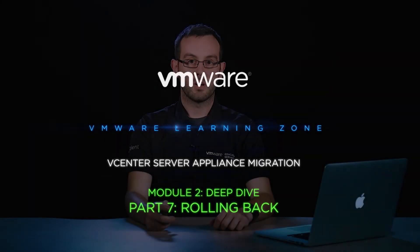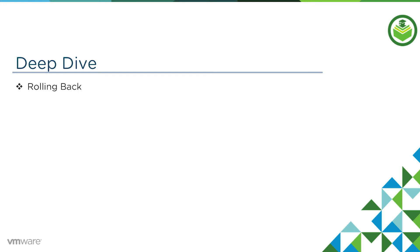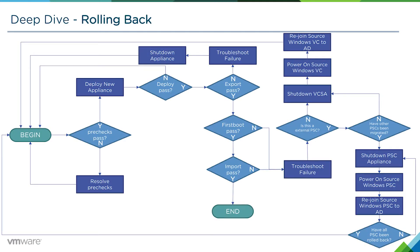In this video, to conclude module two, we'll talk about what our options are if we need to roll back due to a failure in the migration process. Looking at this flowchart, it may appear overly complex, but all it's effectively saying is if there is an issue at any particular moment, we just roll back and start the migration process again.